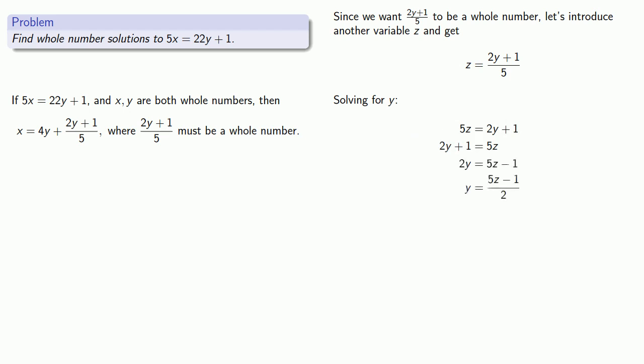Again, if we want y to be a whole number, we need this fraction 5z minus 1 over 2 to also be a whole number. So again, let's split the fraction into a part that can be divided by 2 and some leftovers.